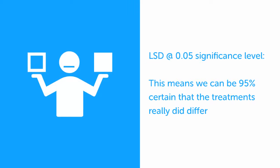The LSD is calculated at a specific level of significance. When you see the LSD calculated at the .05 level, for example, this means we can be 95% certain that the treatments, hybrids, or practices really did differ in yield if the difference between them was equal to or greater than the LSD. Significance levels of .05 or .1 are most commonly used in agricultural research, although you may occasionally see it calculated at the .2 level.